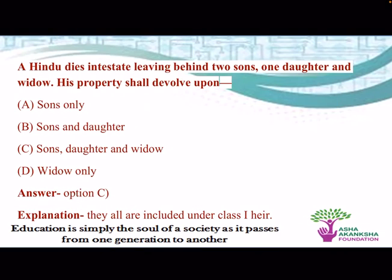A Hindu dies leaving behind two sons, one daughter and a widow. His property shall devolve upon whom? The correct answer is sons, daughter and widow. All three are class 1 heirs, so the property will devolve upon all of them.